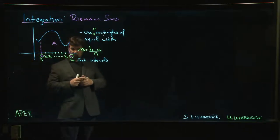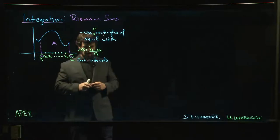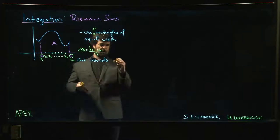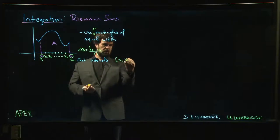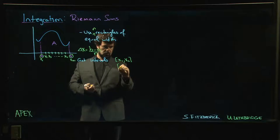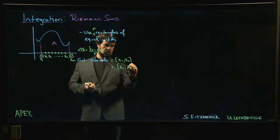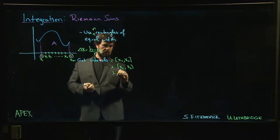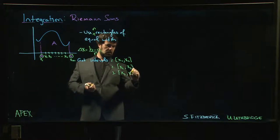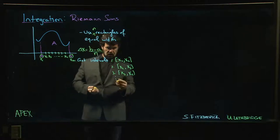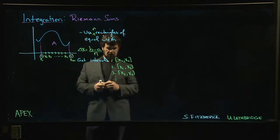We need n+1 points in total because the intervals are going to look like x1 to x2 (that's the first interval), second interval x2 to x3, the third interval goes from x3 to x4, and so on.